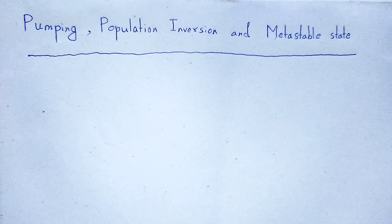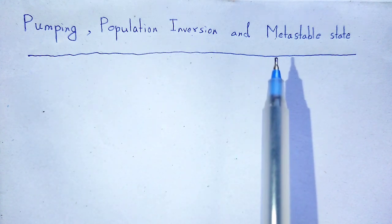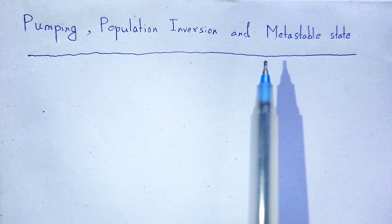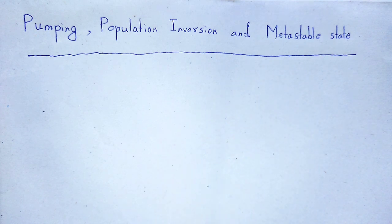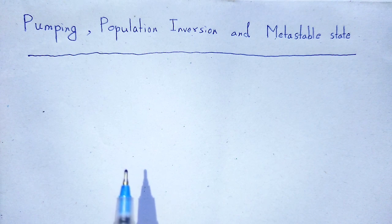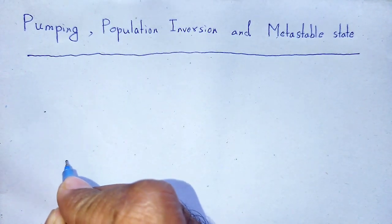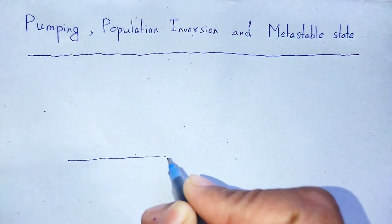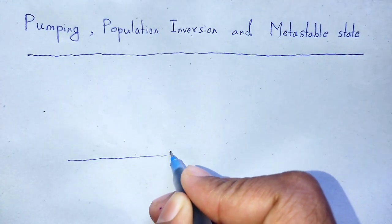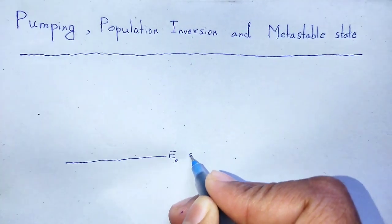We have to understand these three terms in order to study details about lasers. Let us consider an atomic system that is characterized by discrete energy levels. At energy level E0, that is the ground state.